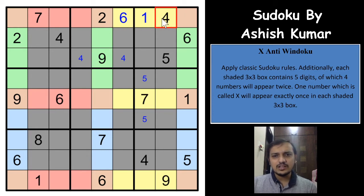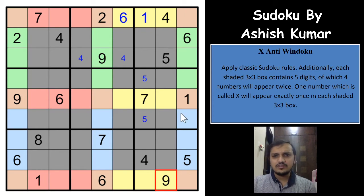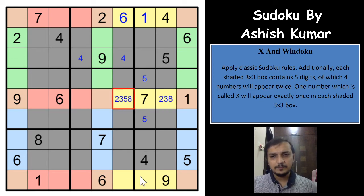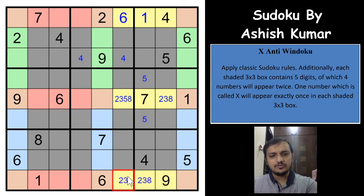There are exactly 5 digits written in the yellow region now. The 4 remaining digits are 2, 3, 5, and 8. So we can write 2, 3, 8 in one group of cells and 2, 3, 5, 8 in another group.